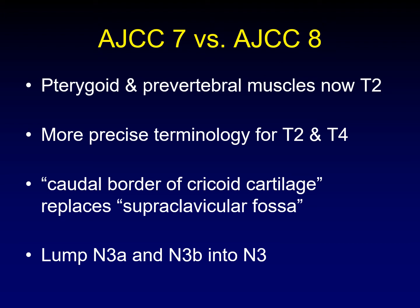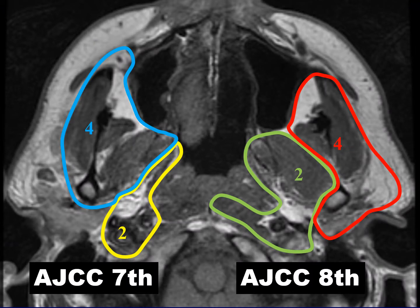A couple of words on the changes when we went from AJCC7 to AJCC8. We have downgraded pterygoid and prevertebral muscles to T2, using more precise terminology for those locations. We've changed to the terminology 'caudal border of the cricoid cartilage.' There used to be N3A and N3B — now we just lump those into N3 disease. This diagram from the AJCC manual shows the differences: T2 now encompasses the medial and lateral pterygoid muscles and prevertebral muscles, while T4 now extends back to include the parotid gland.